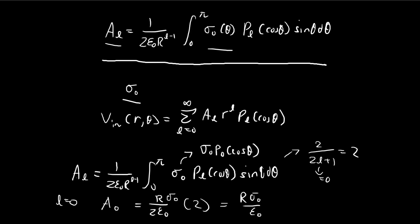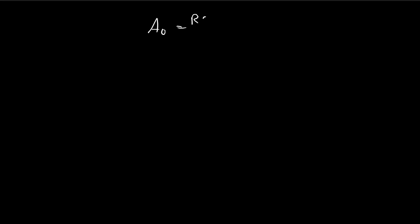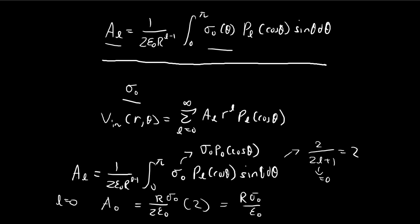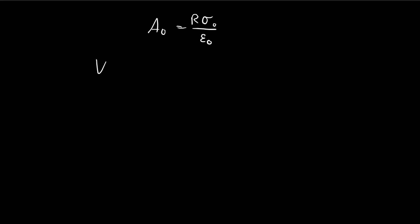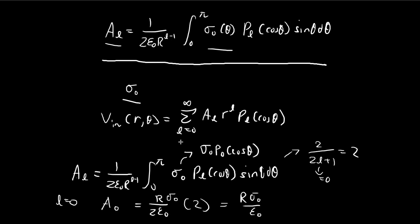So let's just copy this down. So a_0 is equal to this. Actually, we can change this into something we recognize. Wait, let's just get back to the original question first. So the inside potential of the sphere is given by this expression. So only a_0 survives.